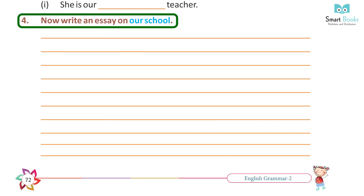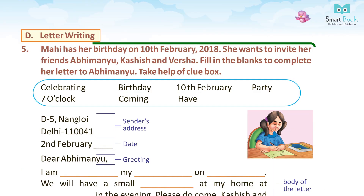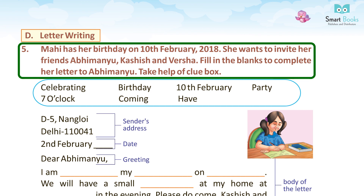Exercise four: Now write an essay on our school. Answer: Do it yourself. D. Letter Writing. Exercise five: Mahi has her birthday on 10th February 2018. She wants to invite her friends Abhimanyu, Kashish, and Warsha. Fill in the blanks to complete her letter to Abhimanyu. Take help of the clue box.